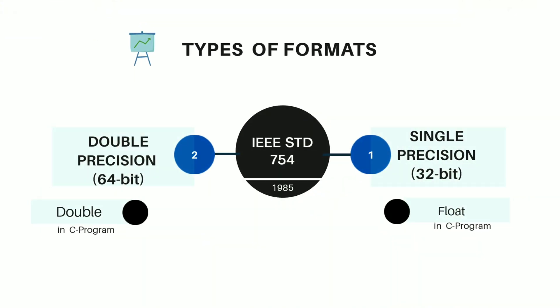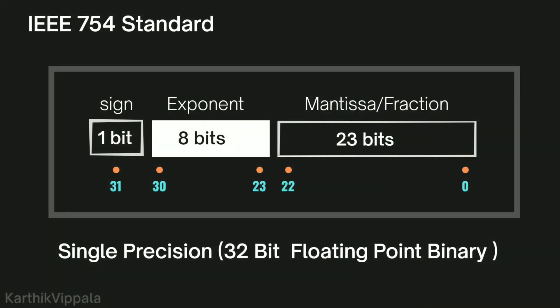So as you can see over here, 105.625 is a real number. To represent this real number in computers we are using IEEE 754 standards, which is included in all Intel PCs, Macintosh, and all other Unix platforms. IEEE has defined two types for the 754 standard, which were released in 1985: single precision, which is 32 bits, and double precision, which is 64 bits. Data type float is an example of single precision and data type double is an example of double precision, both used in C language. In this video I'm going to talk about single precision.